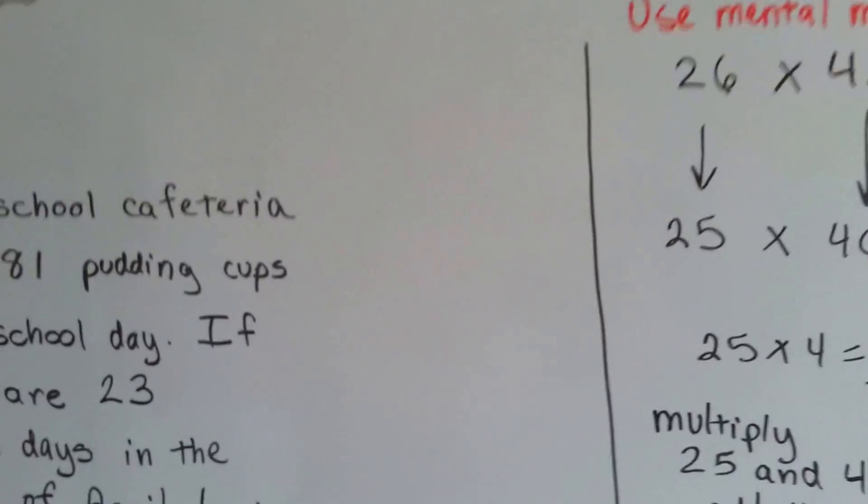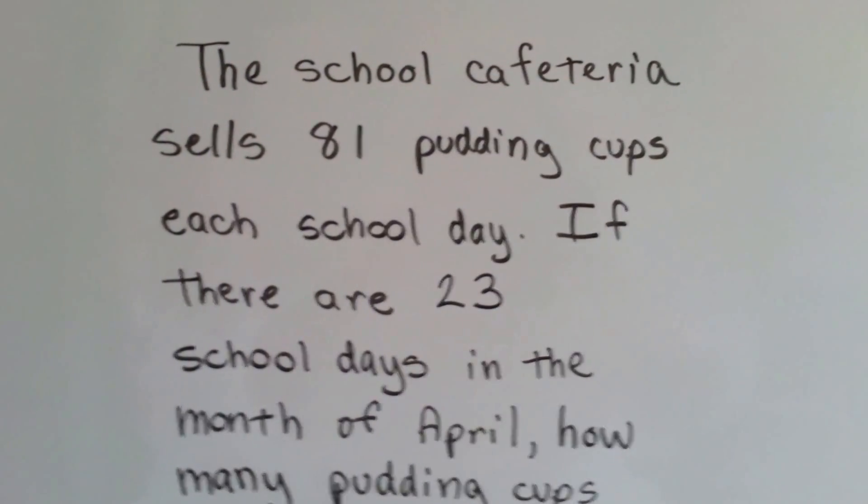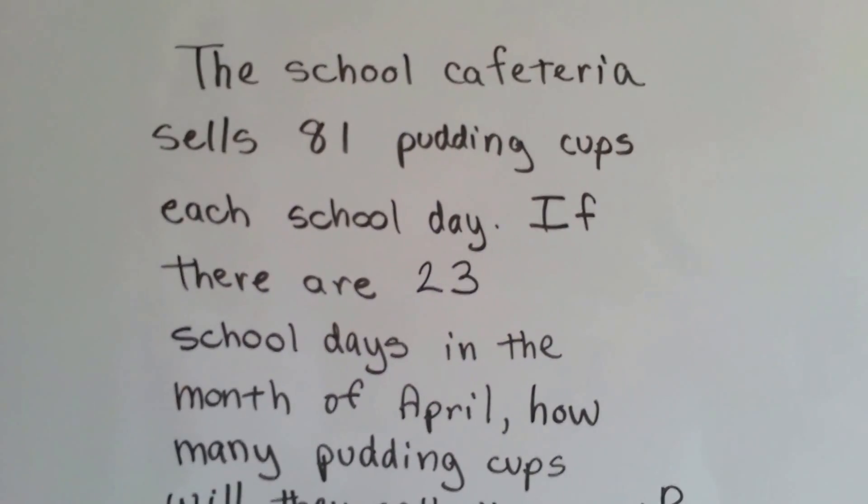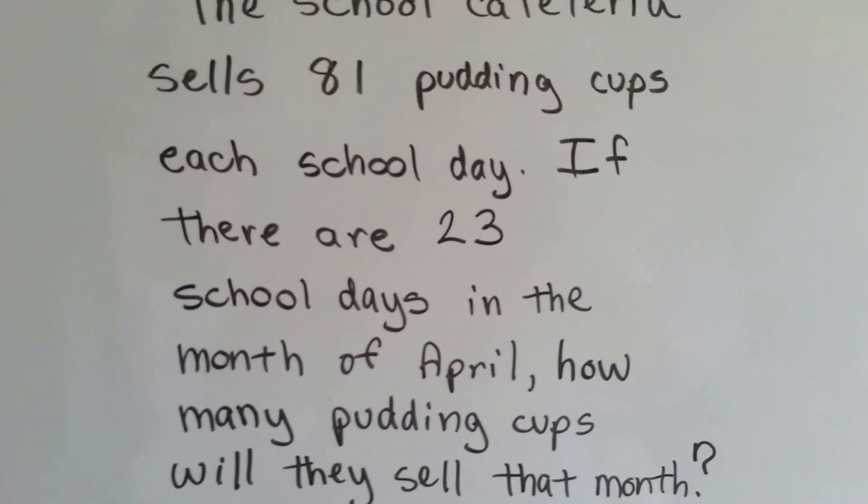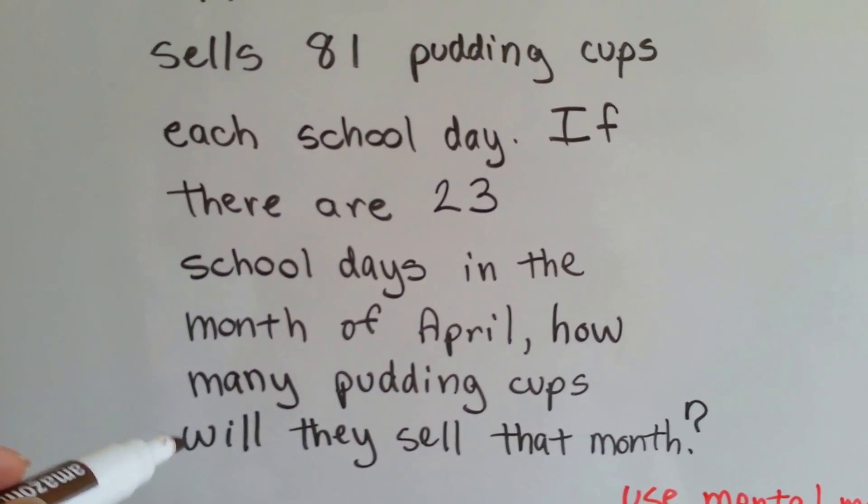So, let's see what we've got here. The school cafeteria sells eighty-one pudding cups each school day. If there are twenty-three school days in the month of April, how many pudding cups will they sell that month?